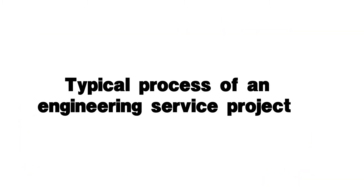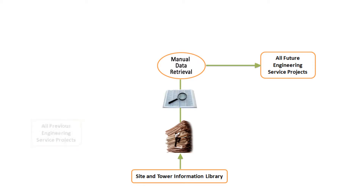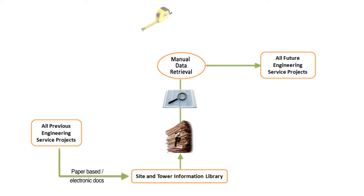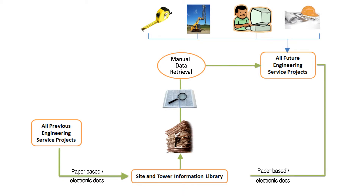Here is a typical process of an engineering service project. The engineer starts by collecting needed project information through manual data retrieval from the library. Then, necessary engineering services will be ordered to obtain additional information needed for the current project. Upon completion of the project, new documents will be added to the library.